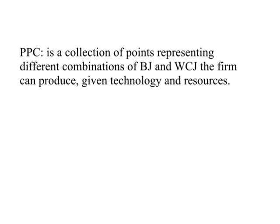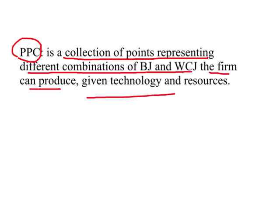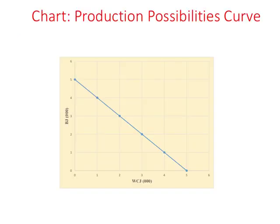Based on what we know, we can write down the definition of the production possibilities curve, abbreviated as PPC. The PPC is simply a collection of points like A, B, C, D, and so on. These points represent different combinations of Baggy Jeans and Western Cut Jeans the firm can produce based on the technology and resources available to it.